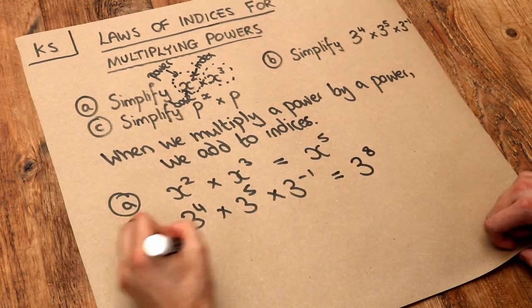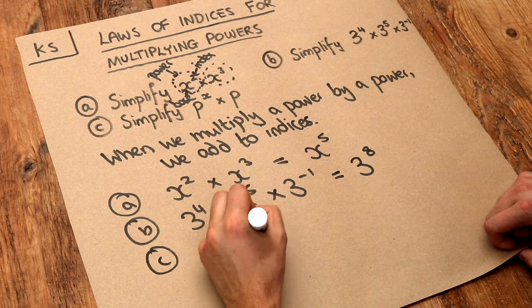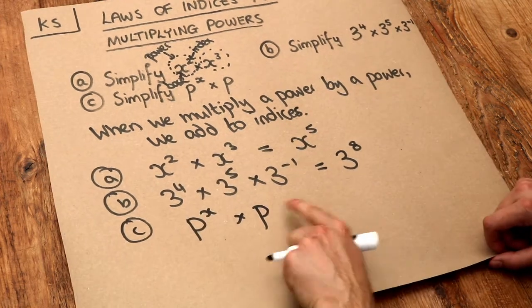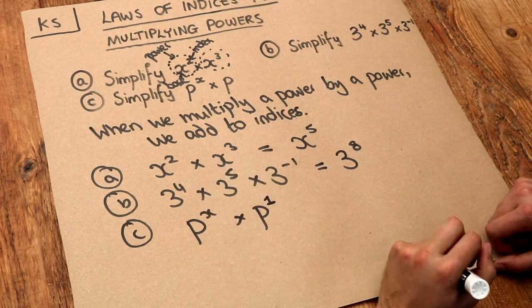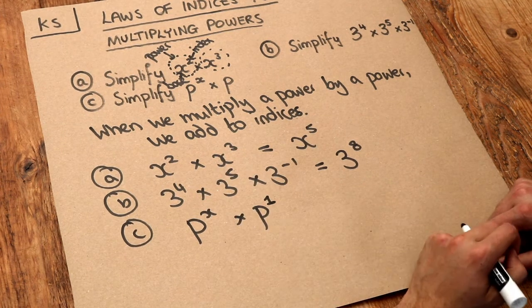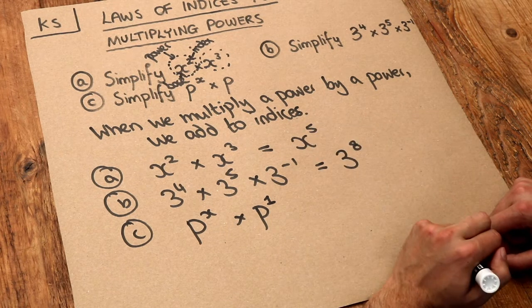For the last one, we've got p to the x times p. If you don't have a power here, there's no index, we can put a little index of 1 because p to the power of 1 is the same as p. Anything to the power of 1 is itself.